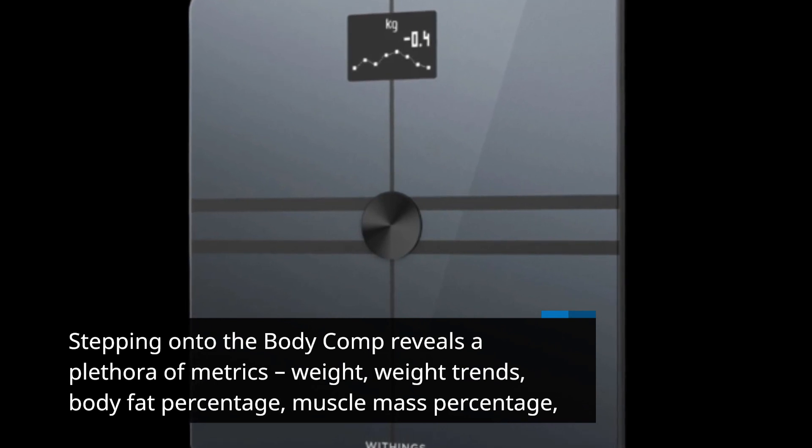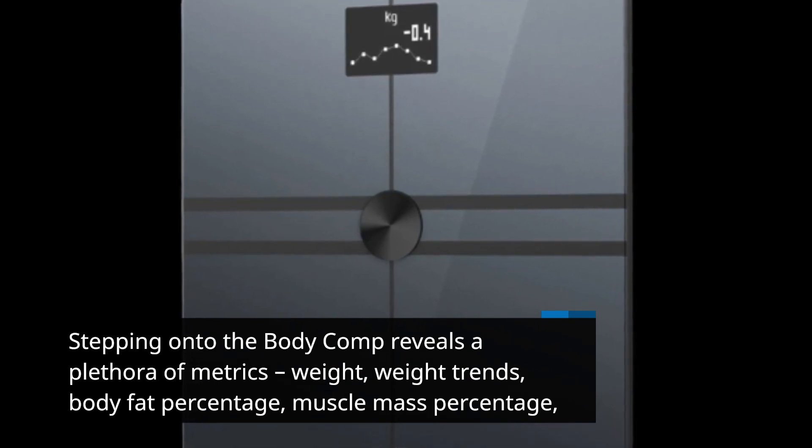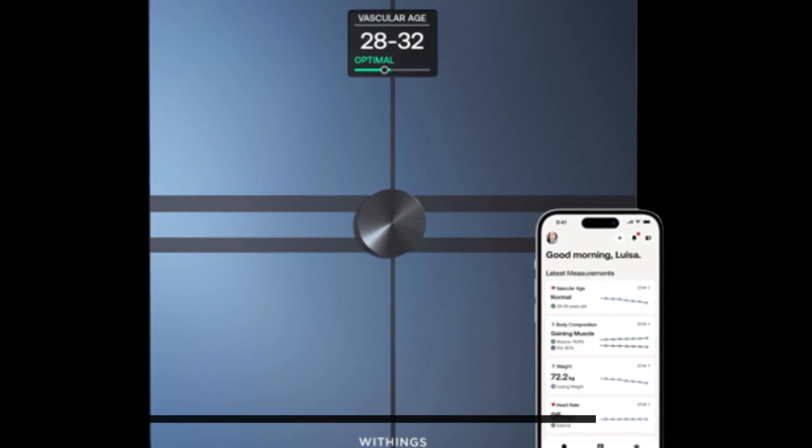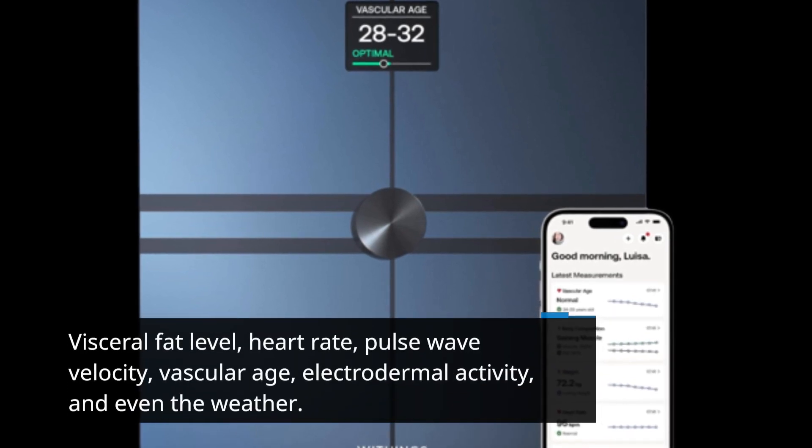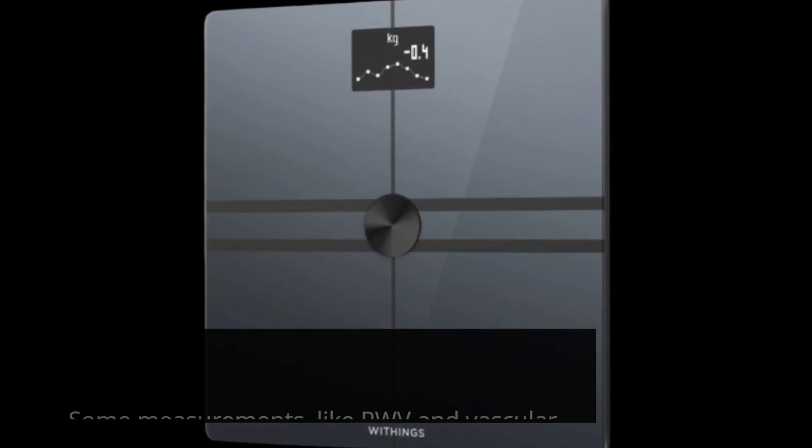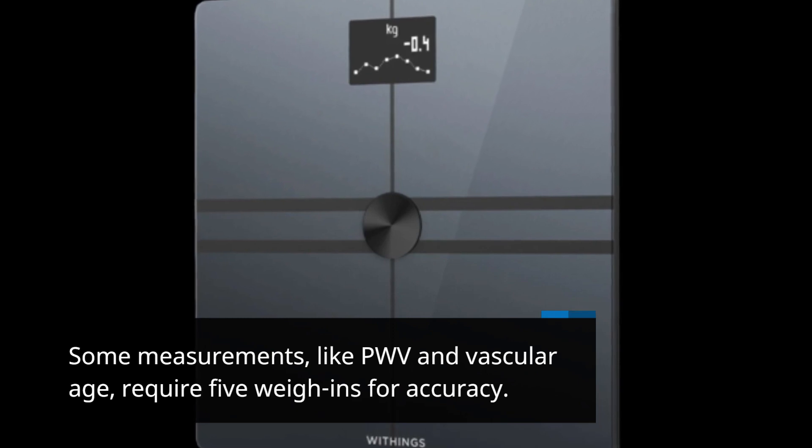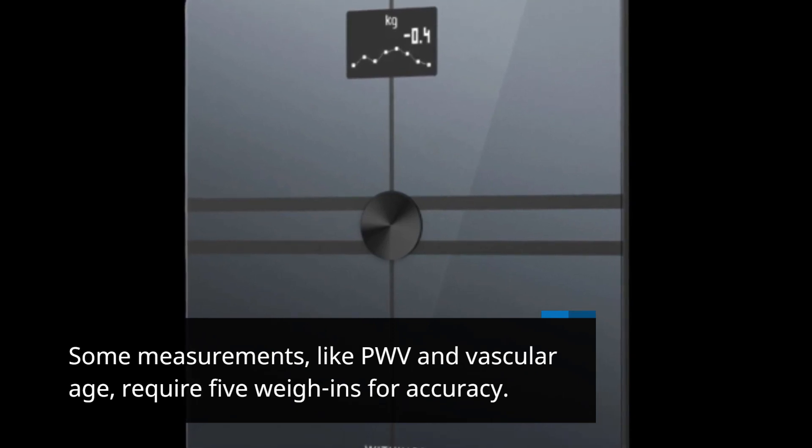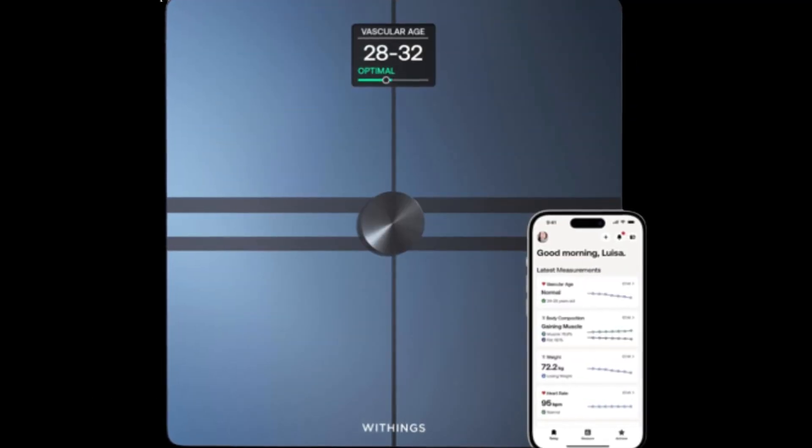Weight, weight trends, body fat percentage, muscle mass percentage, visceral fat level, heart rate, pulse wave velocity, vascular age, electrodermal activity, and even the weather. Some measurements like PWV and vascular age require five weigh-ins for accuracy.